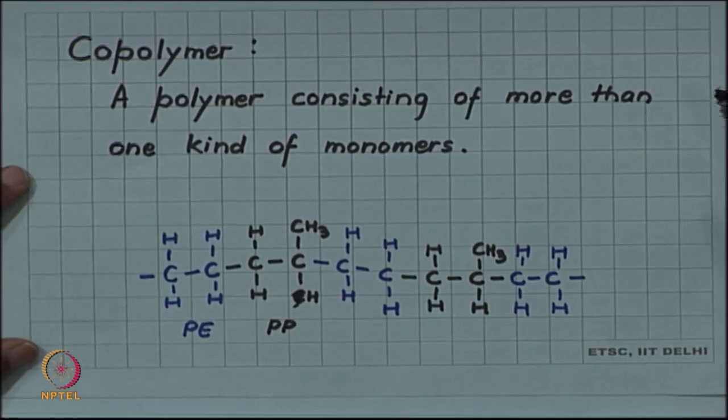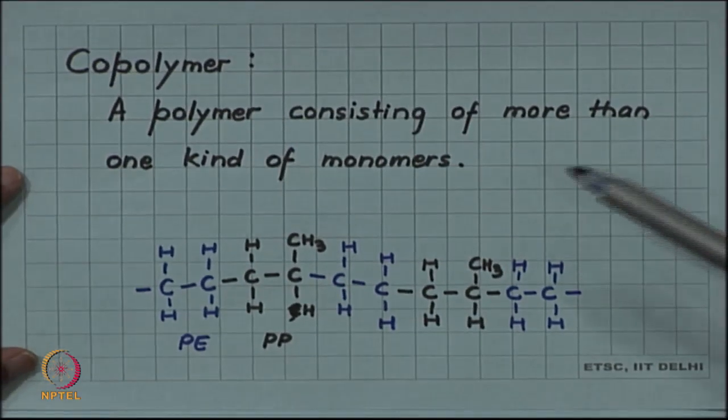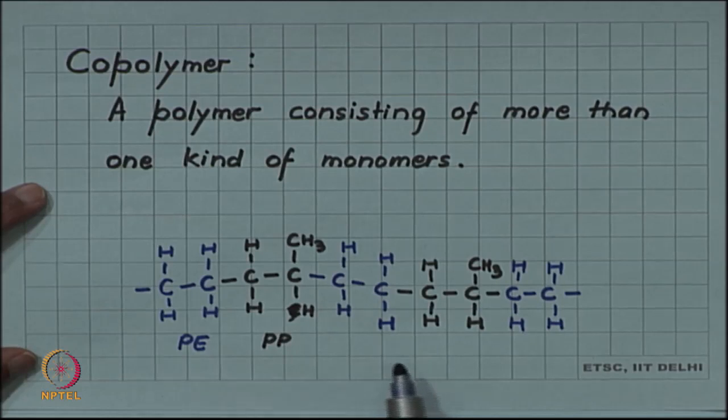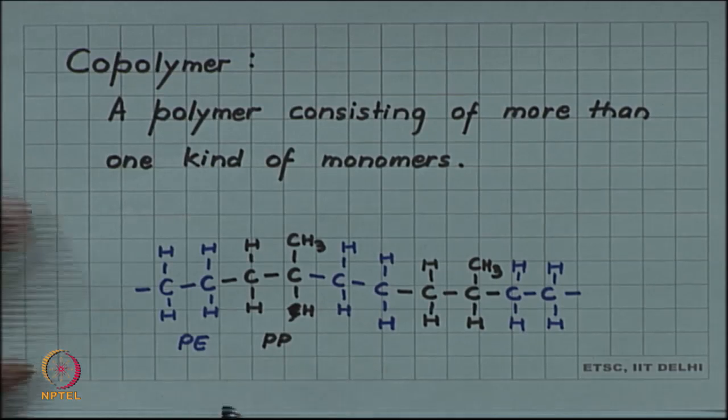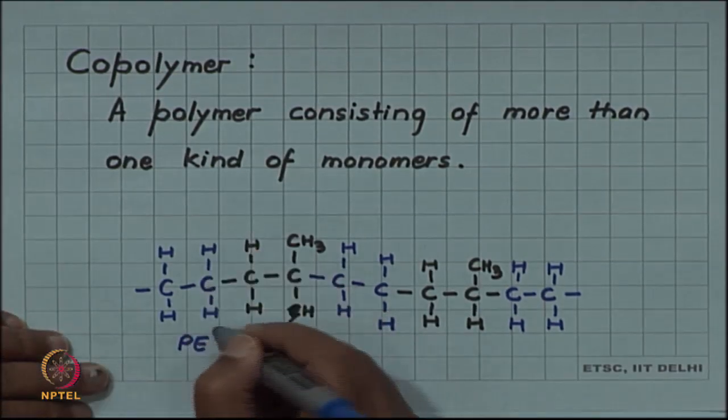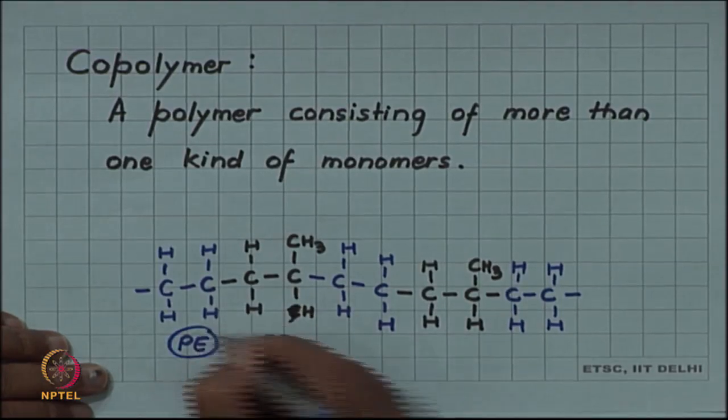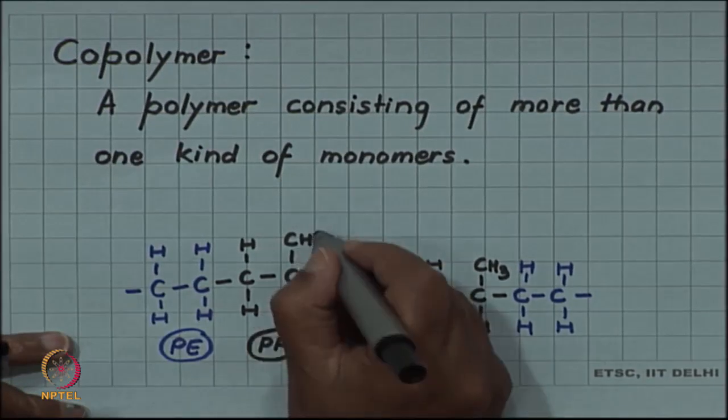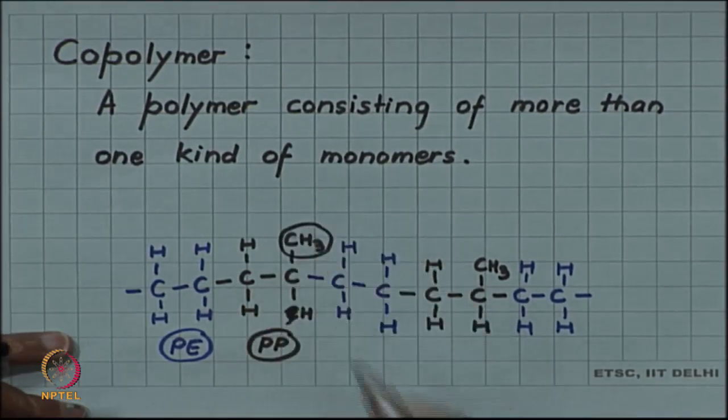So a copolymer is a polymer consisting of more than one kind of monomer. A simple example I have drawn here: you have a monomer of polyethylene PE, but the next monomer is of polypropylene because it has that CH3 side group.